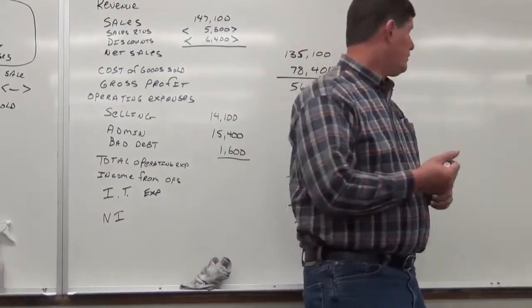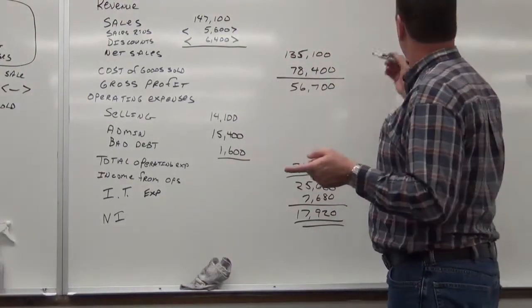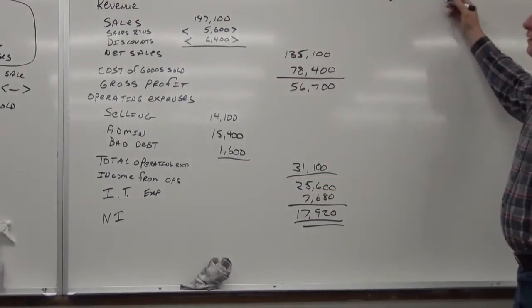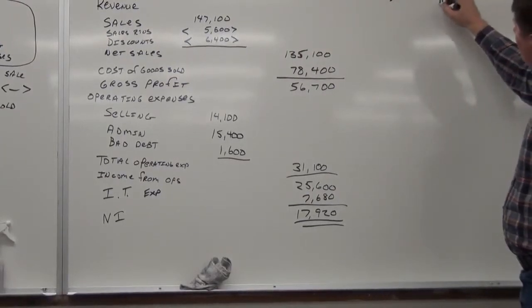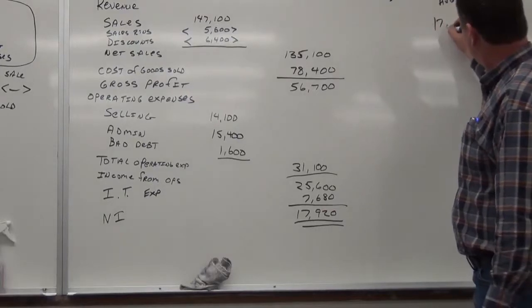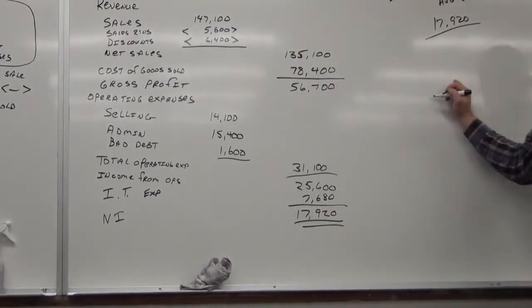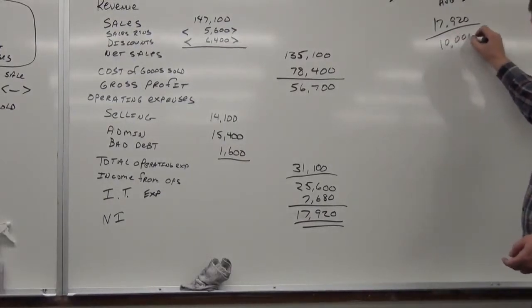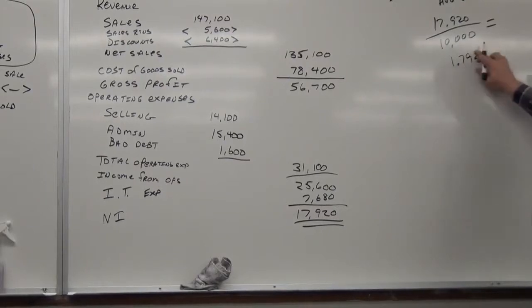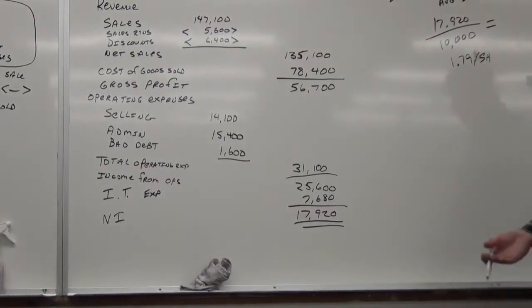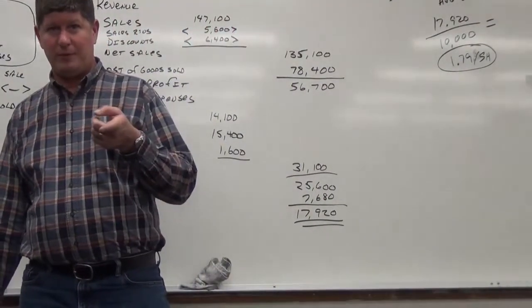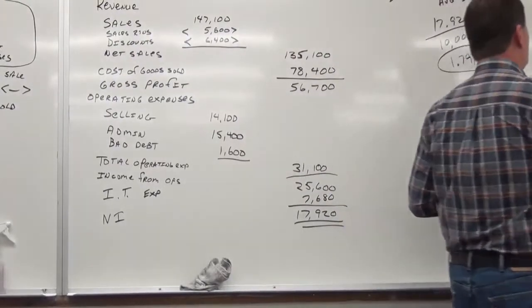Happy? Happy, happy? Happy? All right. So, what's the next thing that they want us to do in this problem? Wasn't earnings per share one of them? So, let's do earnings per share first, just because I feel like it. Earnings per share is, what's the formula? Net income divided by average number of shares.